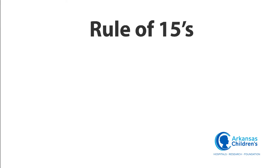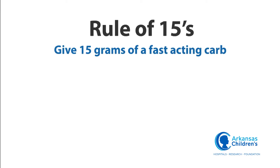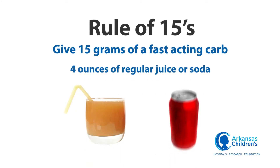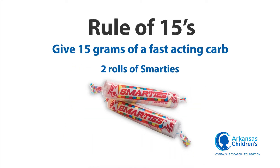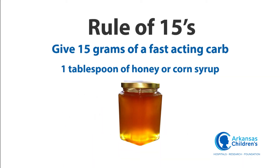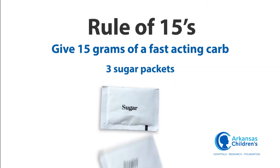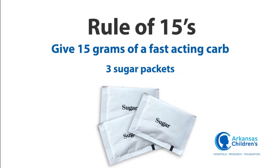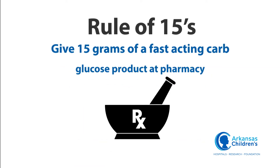You will use the rule of 15 to treat any blood sugar under 70. The first step is to give 15 grams of a fast-acting carb. Examples of fast-acting carbs that equal 15 grams include 4 ounces of regular juice or regular soda, 2 rolls of Smarties, 1 tablespoon of honey or corn syrup, 3 sugar packets, or glucose products sold in pharmacies.